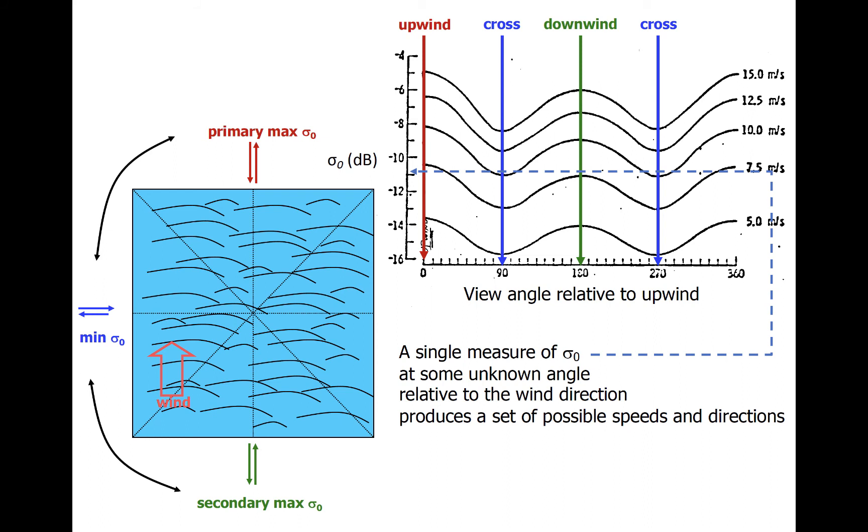Each black line on this panel represents a family of possible backscatter cross-sections and azimuthal angles relative to upwind. By following the blue line across, minus 11 dB, we see it crosses two black lines, plus an infinite number of lines not shown between them. We could, for example, be looking at a seven meter per second wind viewed from upwind, seven and a half or so meter per second wind viewed from downwind, or roughly 10 meter per second wind viewed from across the wind direction. All of those instances would give us the same value of sigma-nought that we get from the power received.